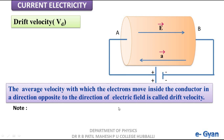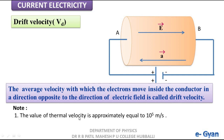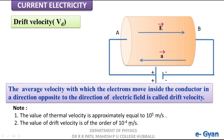Points to be remembered: The value of thermal velocity is approximately equal to 10 to the power of 5 meters per second — it is a very high value. Second point: the value of drift velocity is of the order of 10 to the power of minus 4 meters per second. This value is very small, but though it is very small, it makes a lot in producing electric current in the conductor.